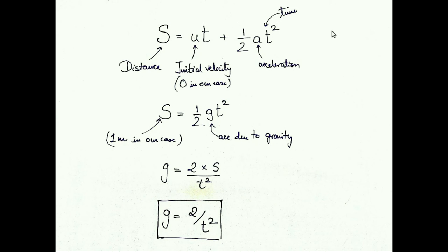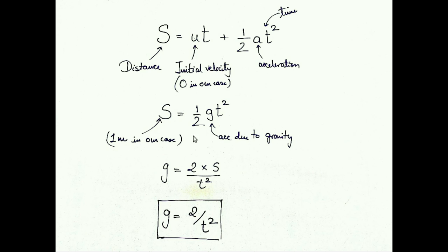To calculate acceleration due to gravity, we use Newton's equation: s = ut + ½at², where s is distance, u is initial velocity (zero, since we drop from rest), a is acceleration (g in our case), and t is the time of flight. Since u = 0, the equation simplifies to s = ½gt². Solving for g: g = 2s/t². With s = 1 meter, g = 2/t². This gives us the value of acceleration due to gravity.